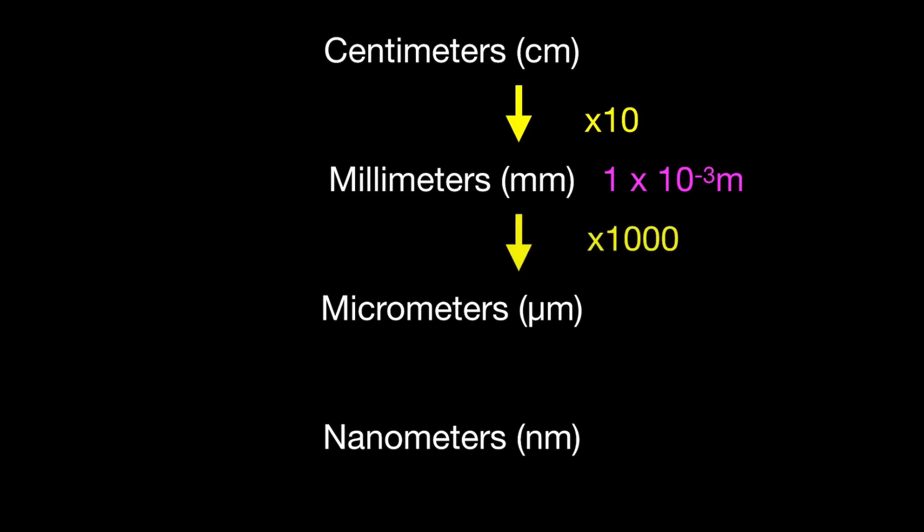Centimeters and millimeters may already be familiar, but micrometers and nanometers might be new. There are 1000 micrometers in every millimeter, so to convert from millimeters to micrometers you multiply by 1000. In scientific notation, a micrometer is 10 to the power of minus 6 meters.